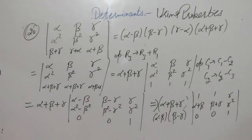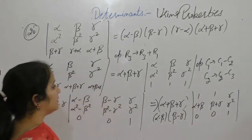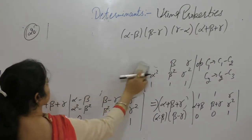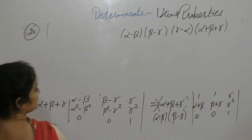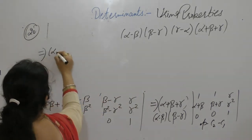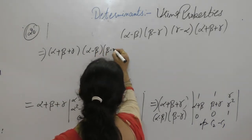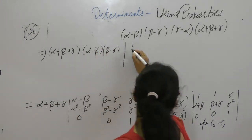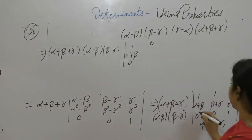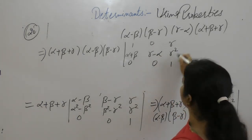Now operate C2 minus C1. After operating C2 minus C1: (α plus β plus γ)(α minus β)(β minus γ). Row entries become: 1; then for C2 minus C1, beta cancels giving γ minus α; then 0, γ, γ squared, 1.